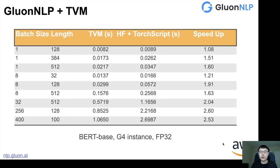To help people deploy GluonNLP models, we integrated with TVM. Here are performance comparisons between GluonNLP plus TVM versus HuggingFace plus TorchScript, using BERT-base as the backbone model, testing inference speed with different batch sizes and sequence lengths. We can see that using TVM, the overall latency is lower than HuggingFace plus TorchScript, and in some cases it can give you a 2x speedup. All experiments are conducted on a G4 instance with FP32 precision.